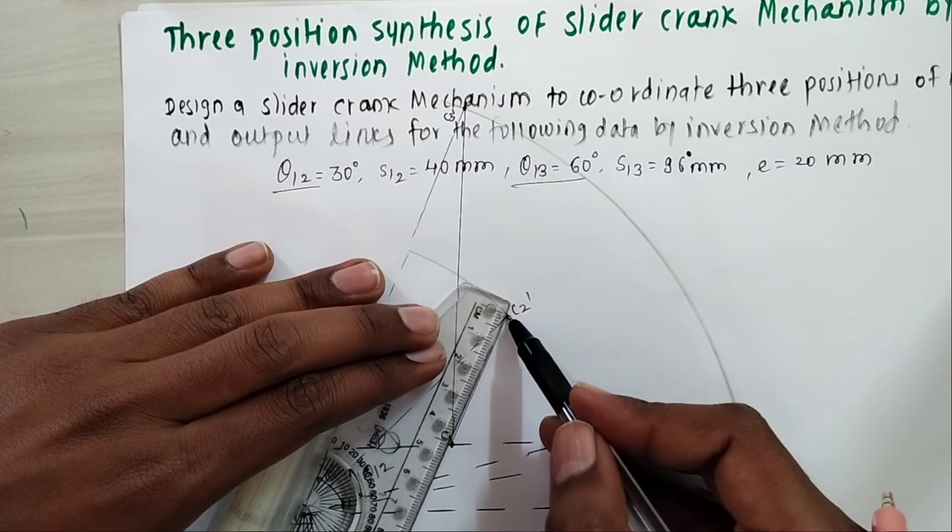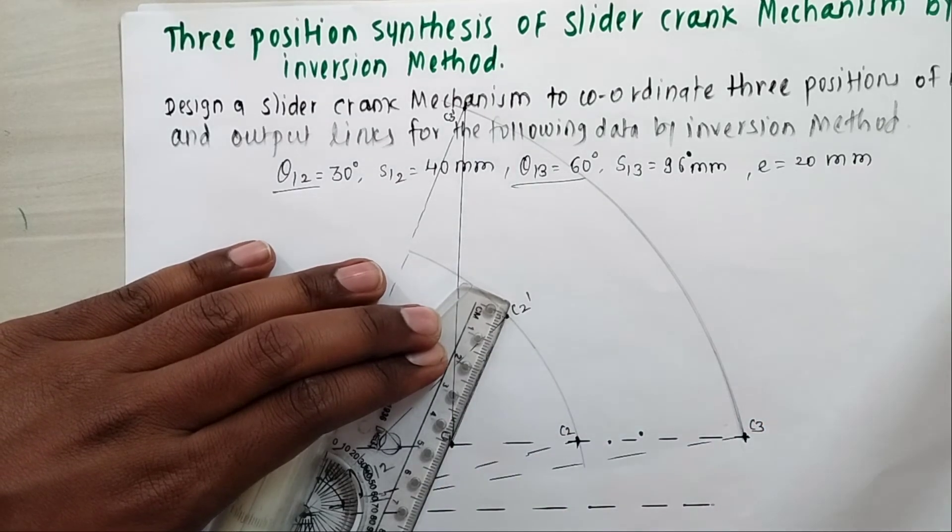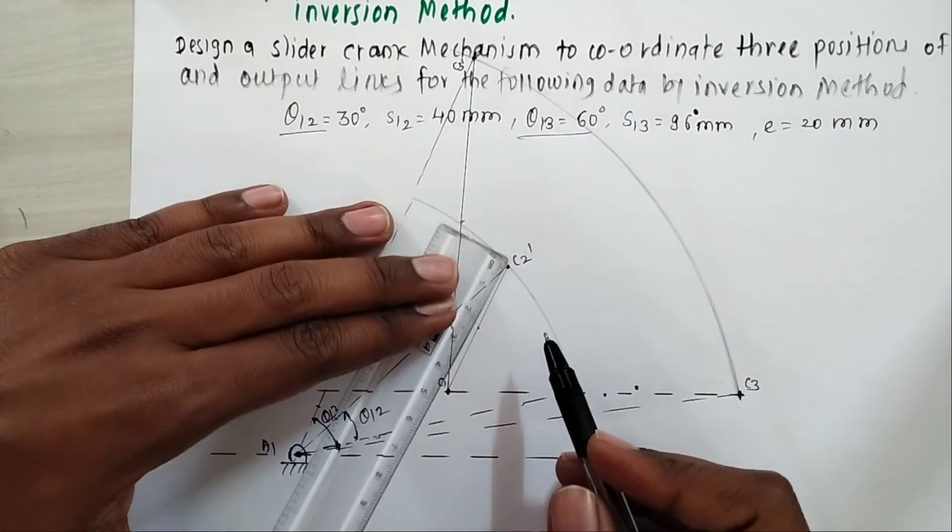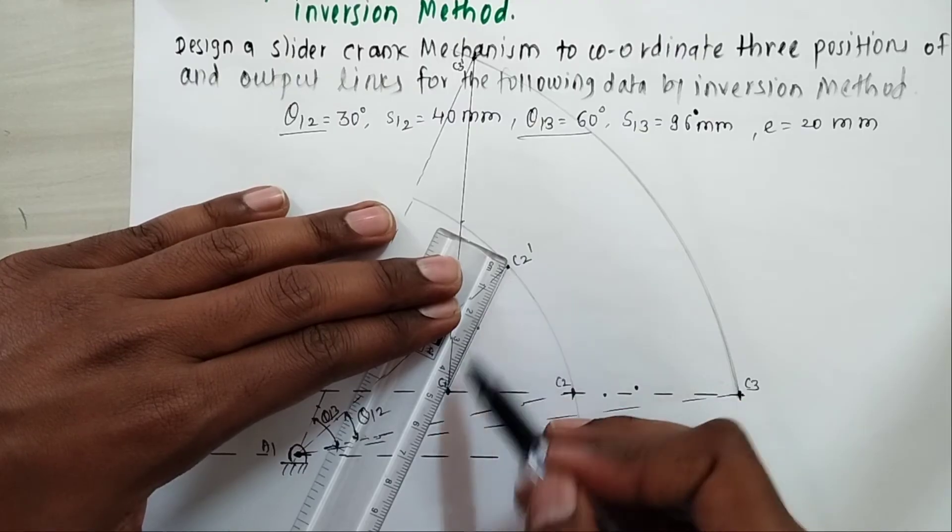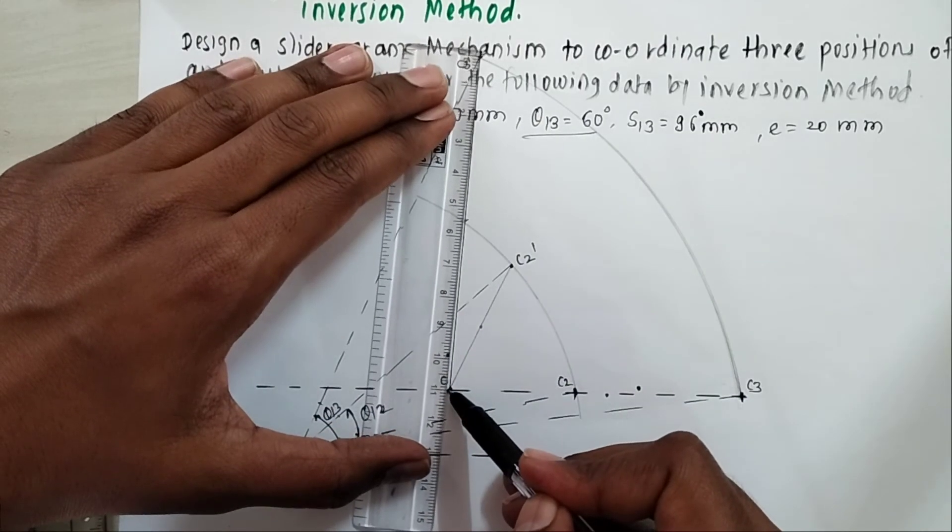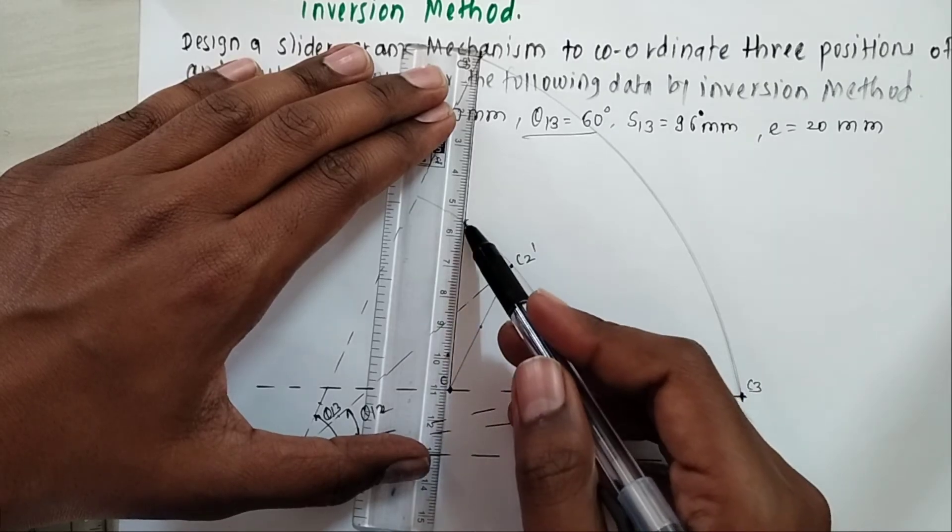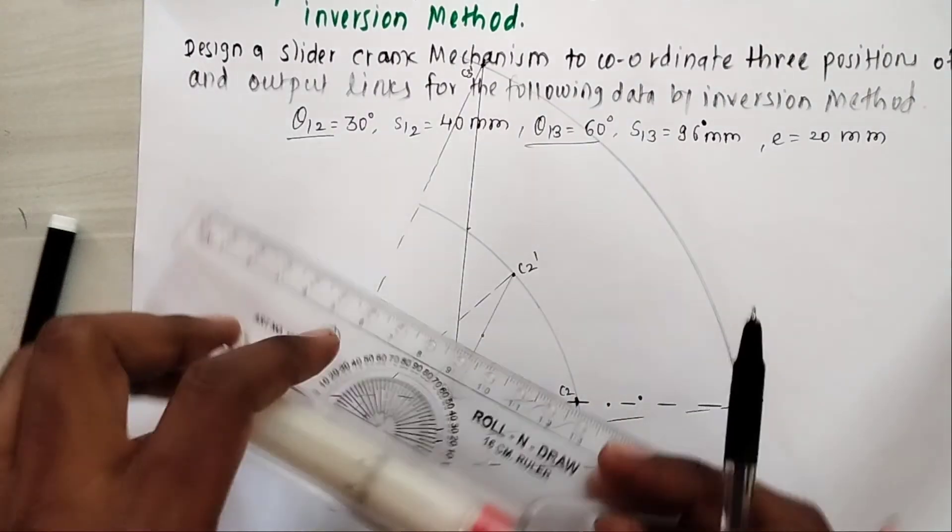I draw perpendicular bisectors taking half distance. You can see I mark these points to draw perpendicular bisectors. It is approximately 45, so 22.5, and 11, so 5.5. Now through this draw perpendicular bisectors of these two.